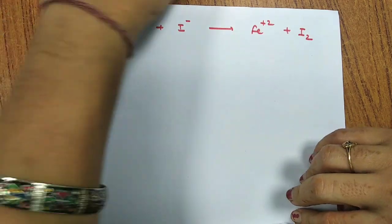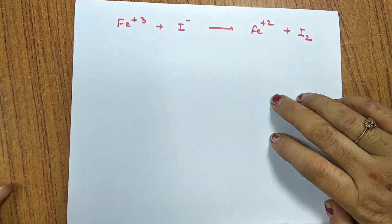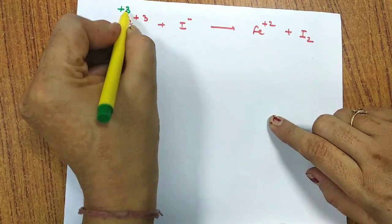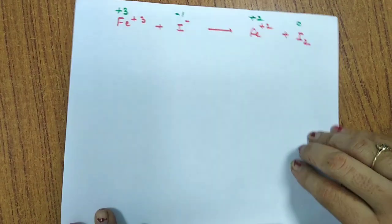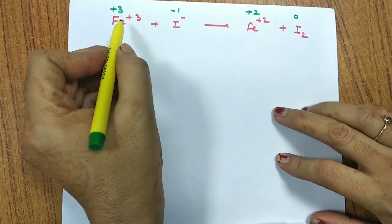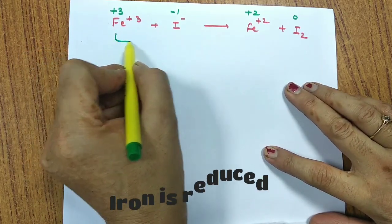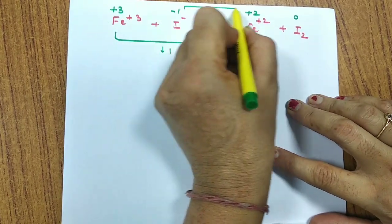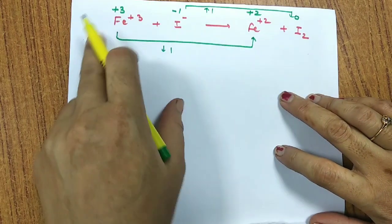Now using these steps, let's balance a simple example equation. The first step is to write the oxidation numbers. Using a different color pen: iron is +3, iodide is -1, iron becomes +2, and iodine is 0. These oxidation states have already been covered in previous videos.